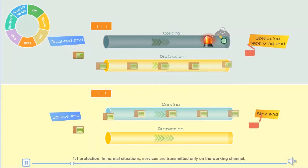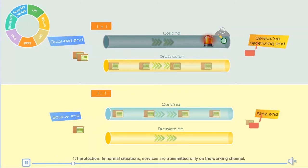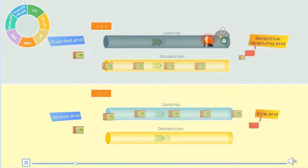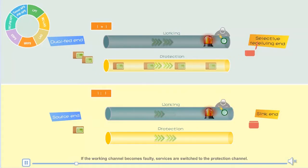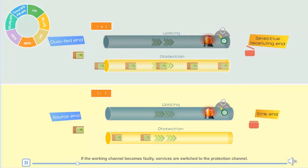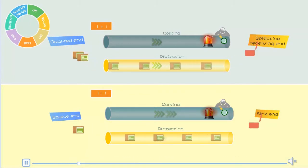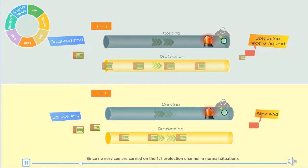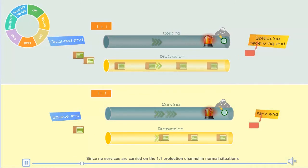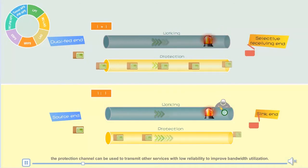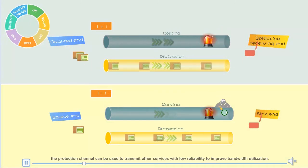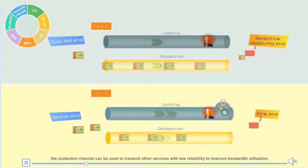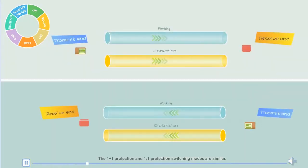In 1-to-1 protection, in normal situations, services are transmitted only on the working channel. If the working channel becomes faulty, services are switched to the protection channel. Since no services are carried on the 1-to-1 protection channel in normal situations, the protection channel can be used to transmit other services with low reliability to improve bandwidth utilization.